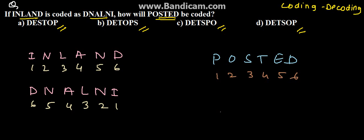The required code will be 6, 5, 4, 3, 2, 1. That means D-E-T-S-O-P.